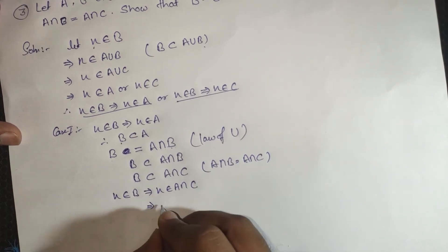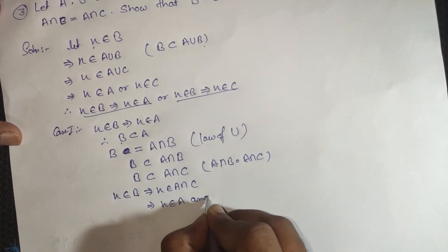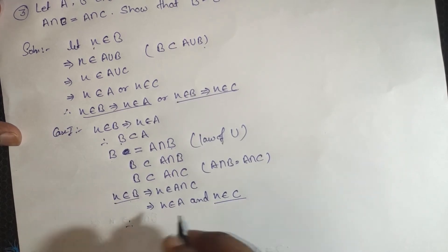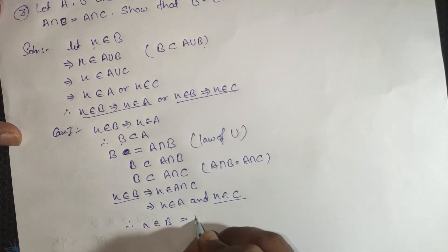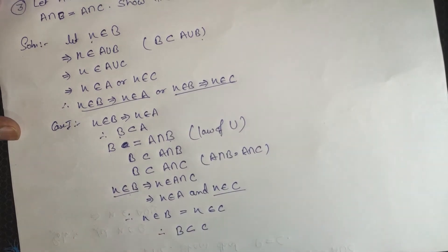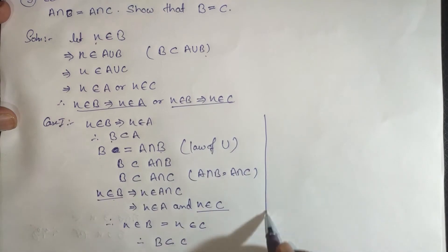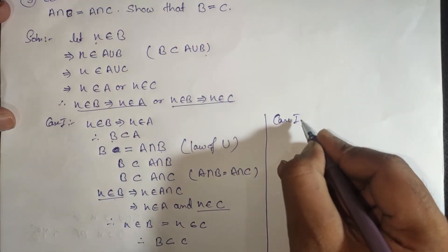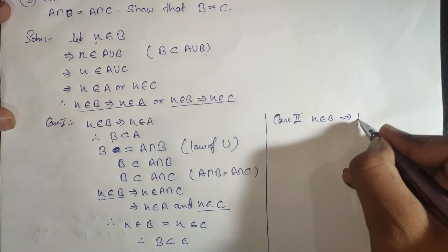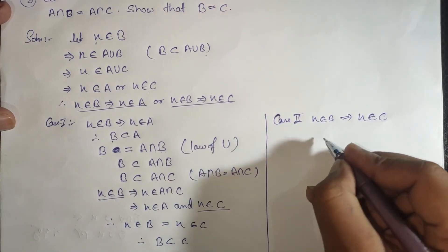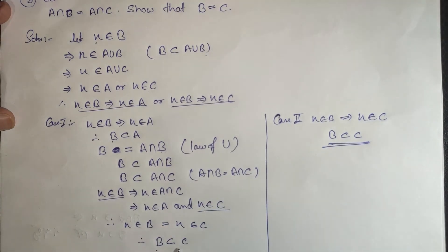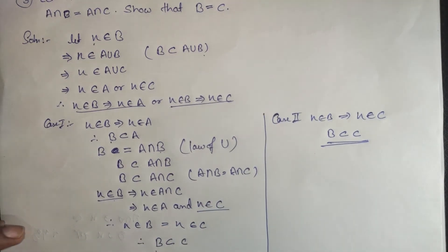Thus X belongs to B implies X belongs to C, so B is a subset of C. In Case 2, when X belongs to B implies X belongs to C directly, then again B is a subset of C. So in both cases B is a subset of C is proved. Now we will prove that C is a subset of B.